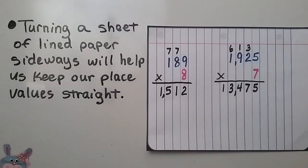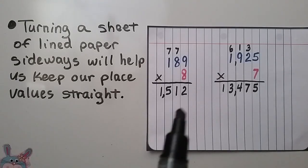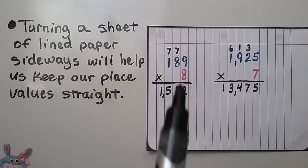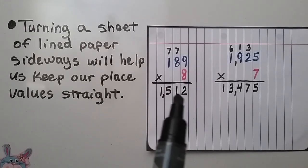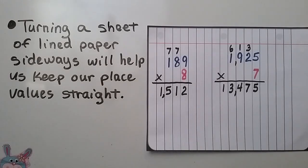Turning a sheet of lined paper sideways will help us keep our place value straight. We can keep the ones place in the ones place — so just turn your paper sideways.